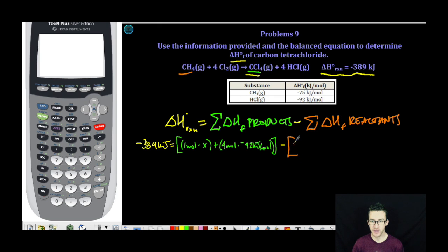I'm going to do the same thing with my reactants. I'm going to start with methane. I've got one mole times negative 75 kilojoules per mole plus notice here, I've got an element in its standard state, four moles times zero kilojoules. Again, you don't actually have to do that step, but I'm just writing it in for clarity.